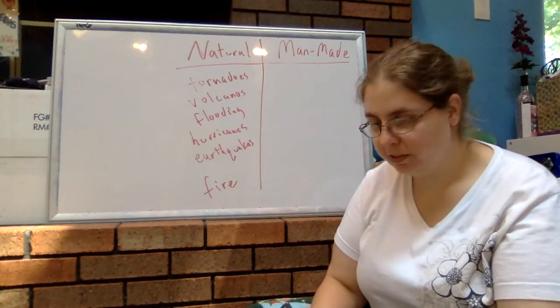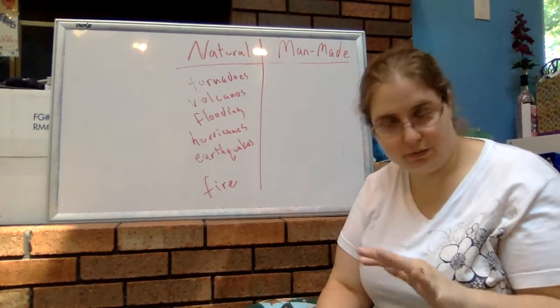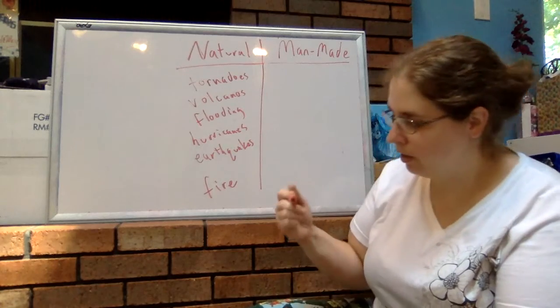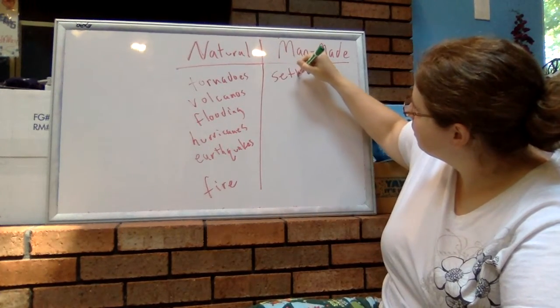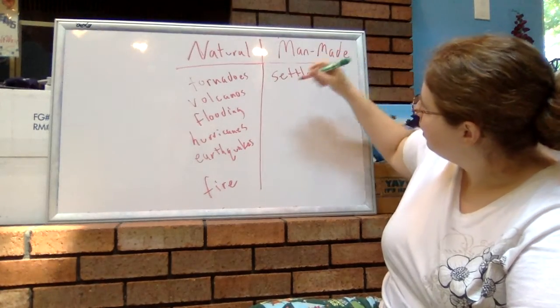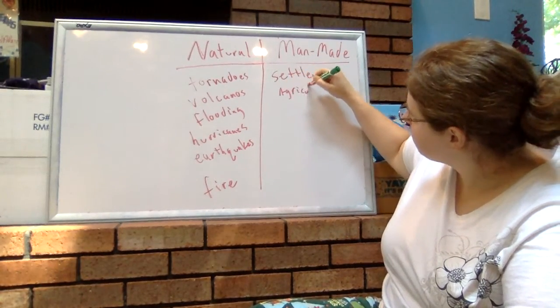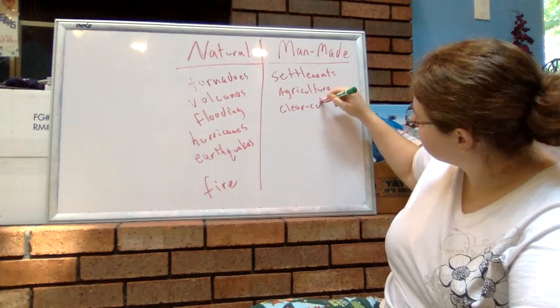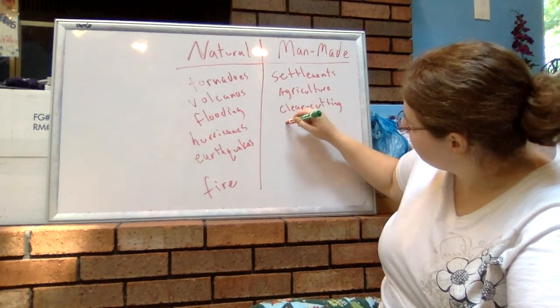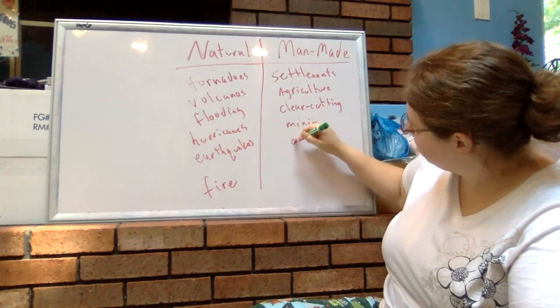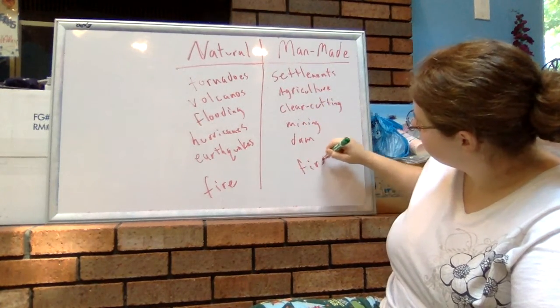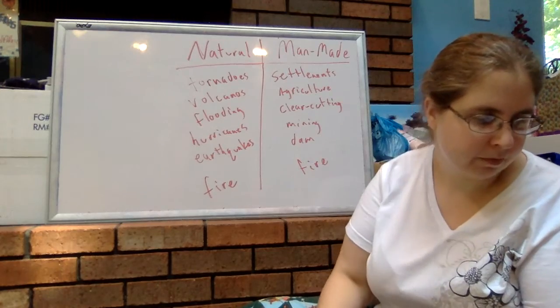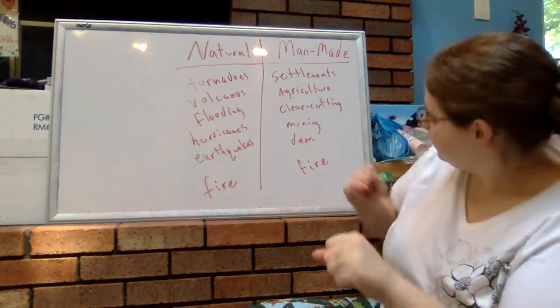Now man-made disturbances are exactly what they are - damage or destruction to an ecosystem caused by humans. It can be the creation of settlements, agriculture, clear-cutting a forest, mining, building a dam, or fire if the fire is caused by humans, and pollution.